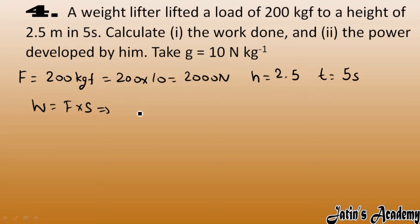Force value we have 2000 Newton and displacement we have 2.5 meter. You can also write 2.5 as 5 by 2. So here you got 5000 joule. You can also write it like this: 5 into 1000 joule, which is kilojoule. So 5 kilojoule is the work done.